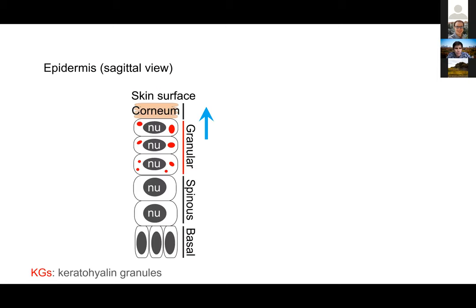So where is filaggrin? Let me walk you through what skin looks like. Here are stem cells of the epidermis, which move towards the surface of the skin. As they do so, they differentiate and form different layers — the spinous layer, the granular layer, and then the stratum corneum at the very top surface.